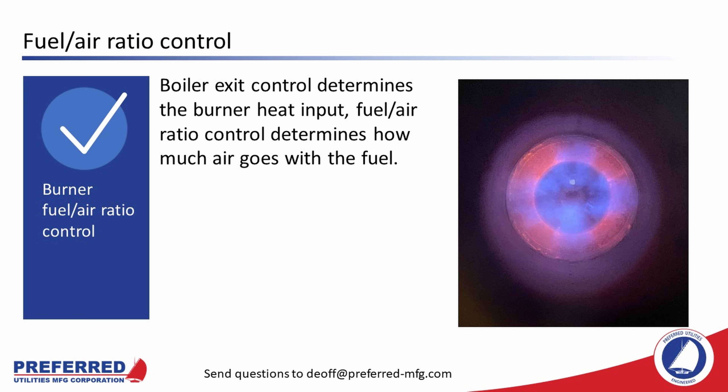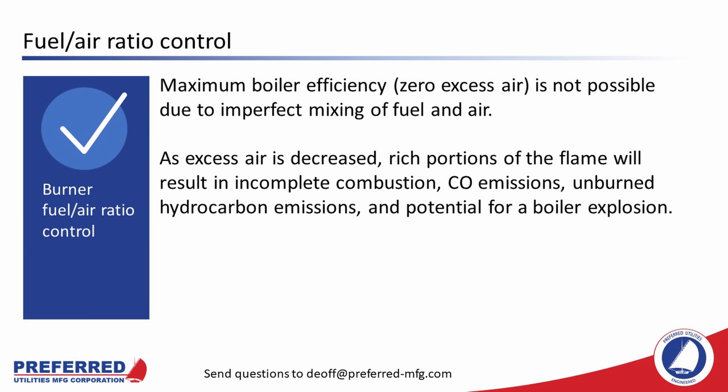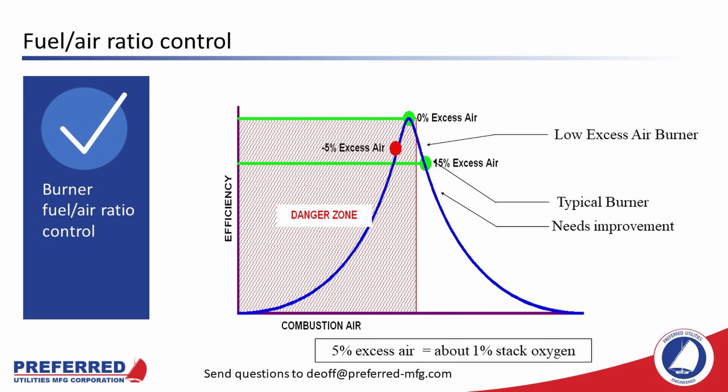Boiler exit control determines the burner heat input; fuel-air ratio control determines how much air goes with the fuel. Pictured at right is a nice-looking flame from a Preferred API low-NOx burner. Maximum boiler efficiency is at zero excess air; however, this is not possible due to imperfect mixing of fuel and air. As excess air is decreased, rich portions of the flame result in incomplete combustion, CO emissions, eventually unburned hydrocarbon emissions, and the potential for a boiler explosion. Excess air is the largest heat loss for most boilers because the air we burn is about 79% inert. This chart shows typical excess air levels and the danger zone if you burn too rich.